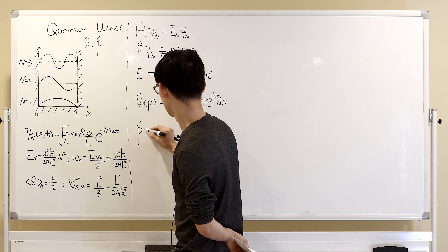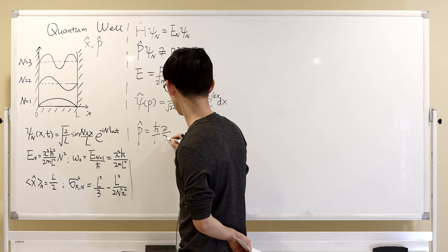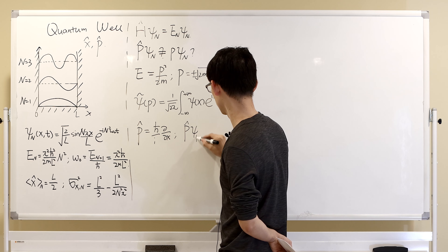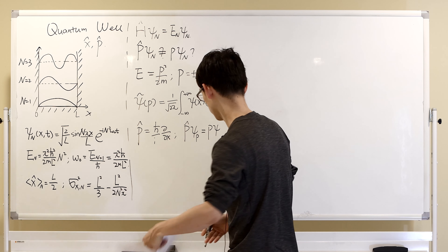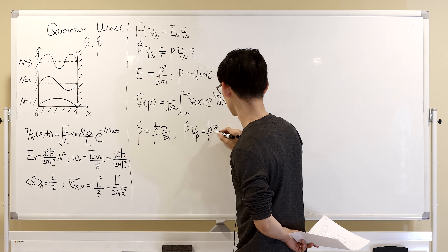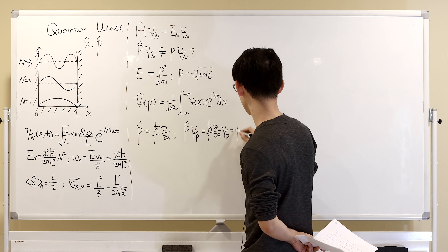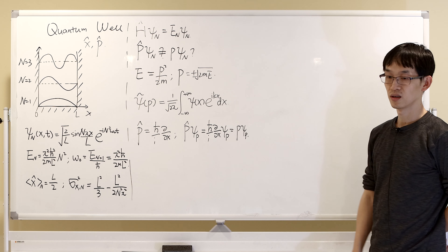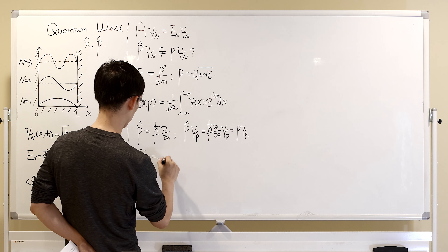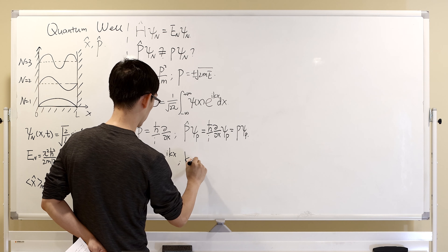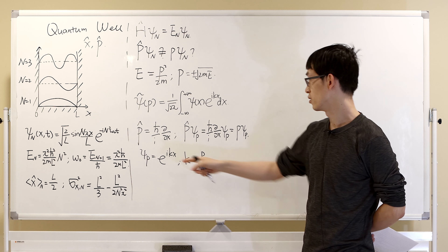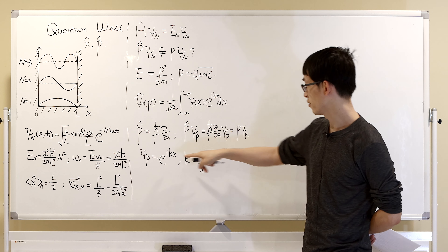We can also be a little smarter. We know the momentum operator's eigenstate is straightforward, because the momentum operator is (ℏ/i)(∂/∂x). A momentum eigenfunction satisfies a first-order differential equation, which you can easily solve: ψ_p = e^(ikx), where k = p/ℏ. So it's a plane wave.